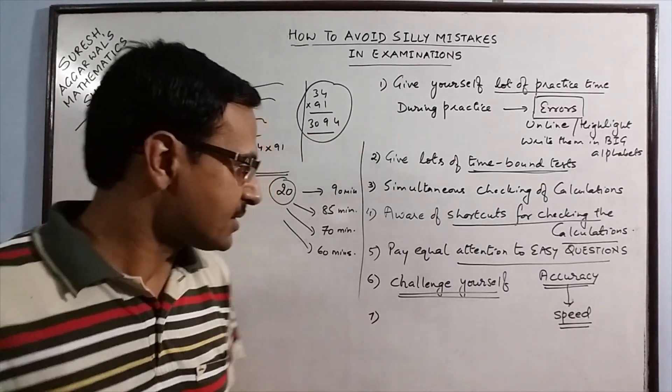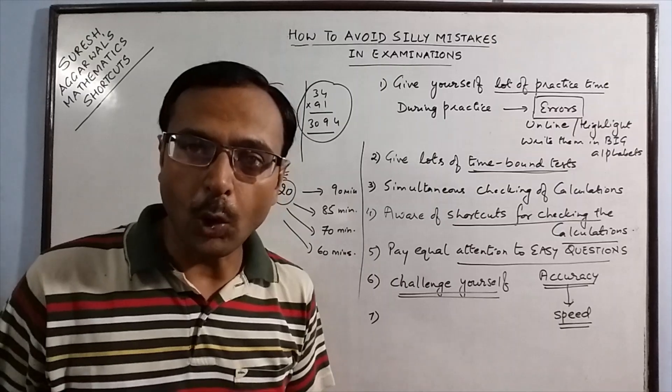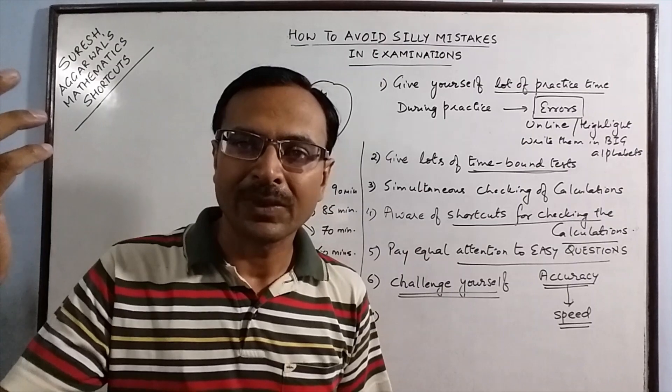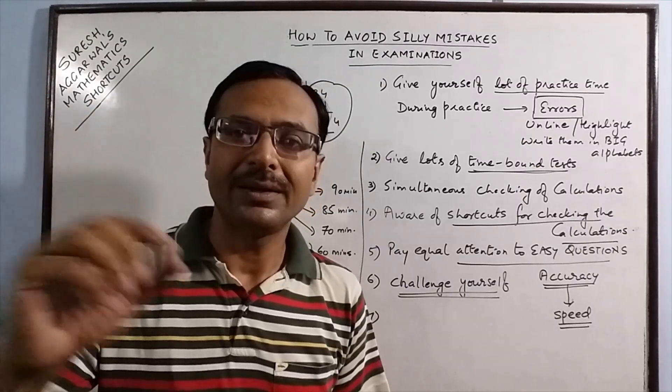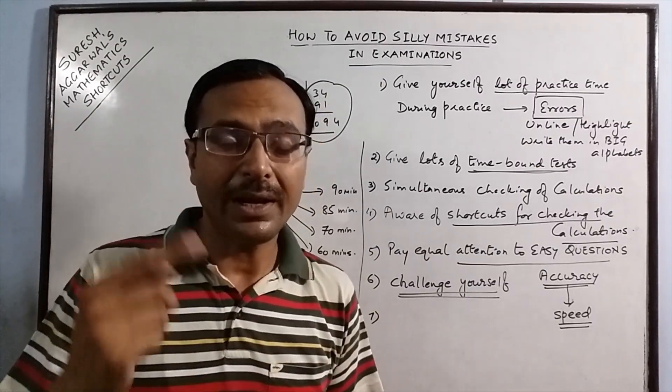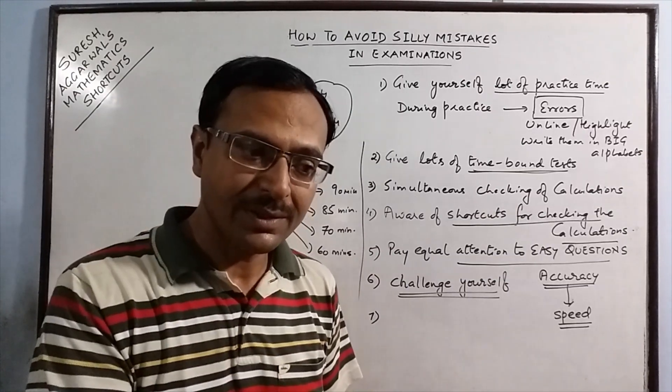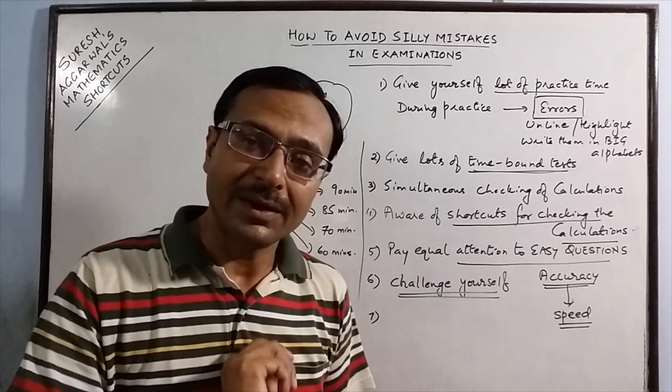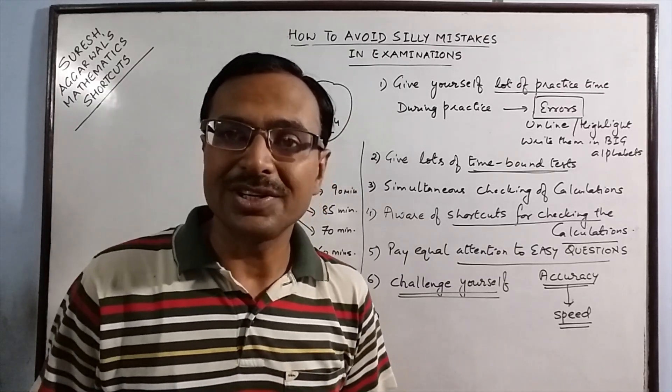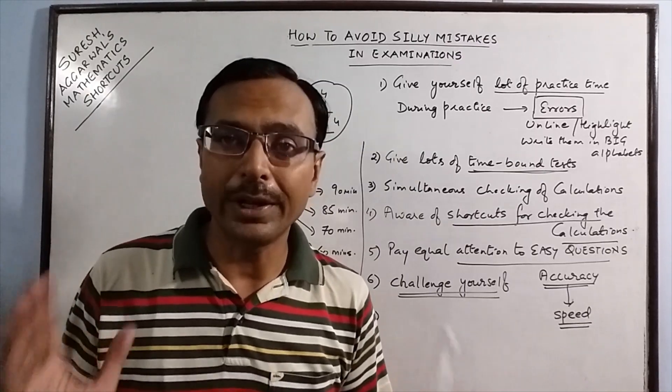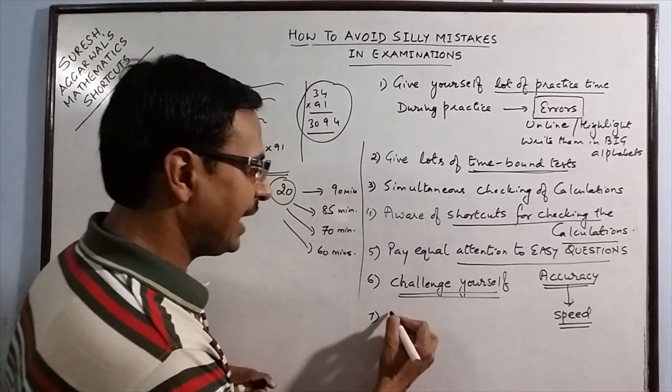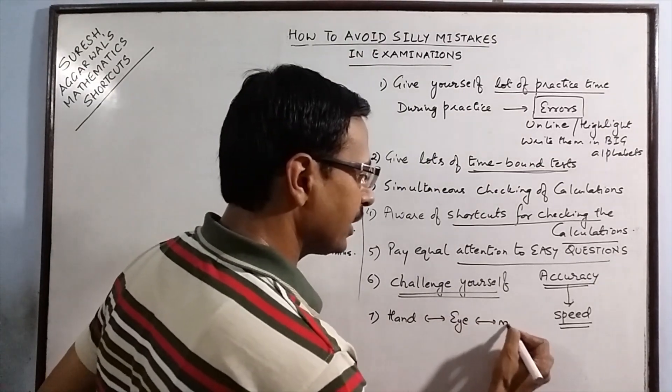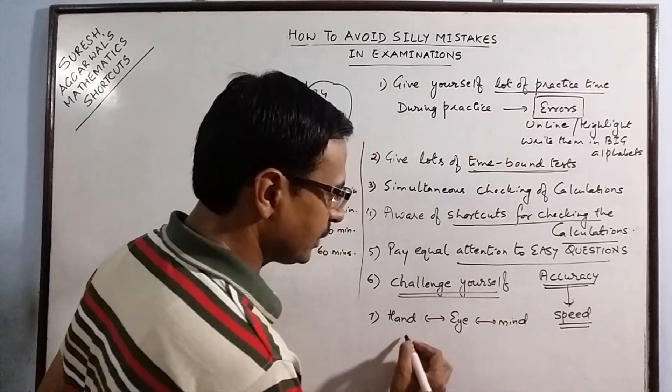Then, final point which I am going to discuss today is the coordination. Now, whenever we think of a particular concept, the mind, the hand which writes, and the eyes which see, watch, the mind gives instructions and the hand writes the concept in the answer sheet. These three have to be well coordinated. So this hand, eye, and mind coordination has to be improved.